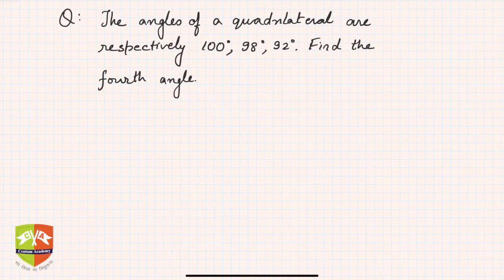Welcome friends to this problem-solving session. We learned in the previous session the angle sum property of a quadrilateral - that the sum of all four angles of a quadrilateral is 360 degrees. Now, based on that, let us try to solve this problem.